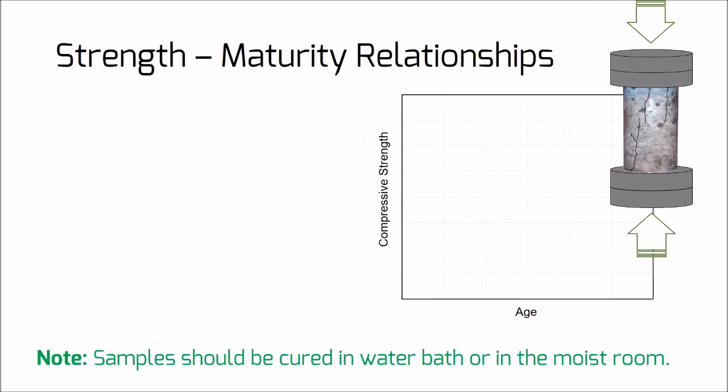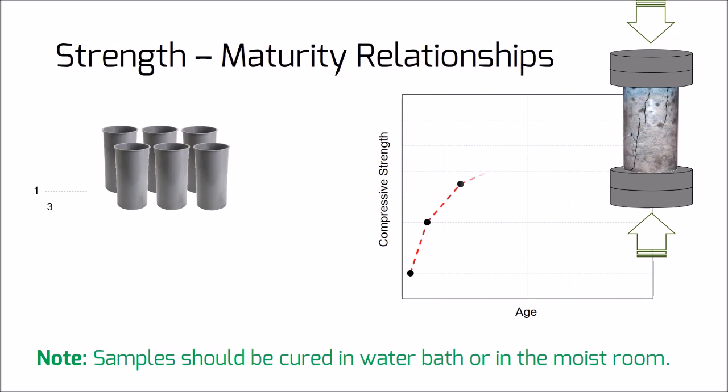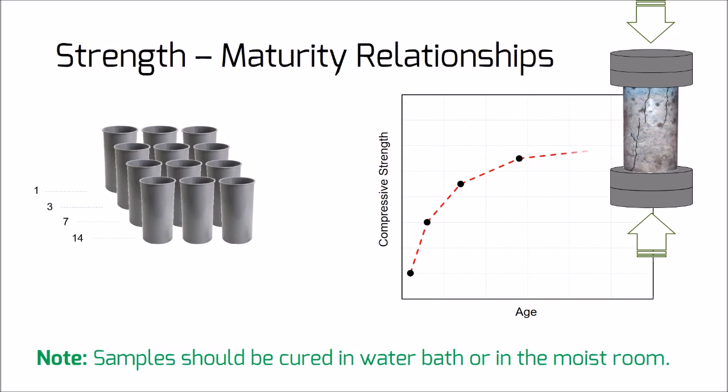To use the maturity method for predicting early age strength, we must first develop the strength-to-maturity relationship by correlating compressive strength with the temperature history of concrete. The standard procedure is described in ASTM C1074. According to this standard, 15 cylindrical samples should be prepared for compression testing and cured in water or moist room conditions.